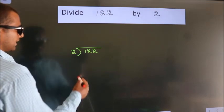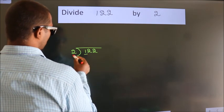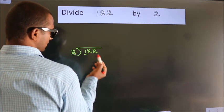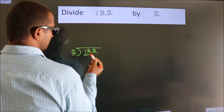Next. Here we have 1. Here 2. 1 smaller than 2. So we should take 2 numbers. 12.